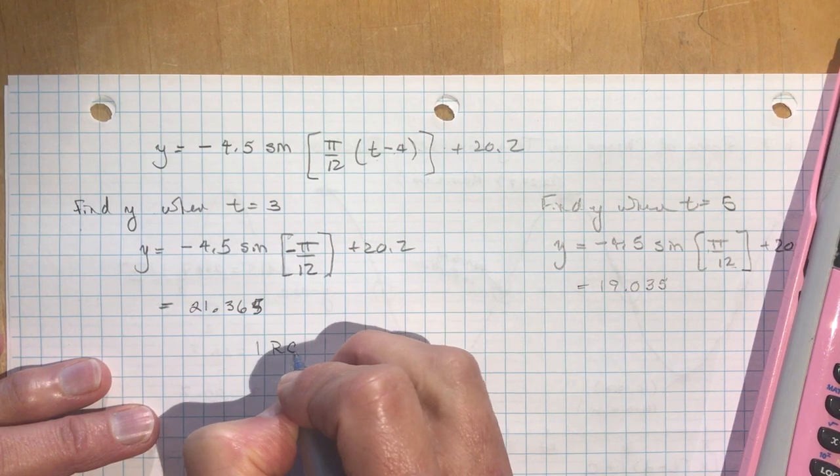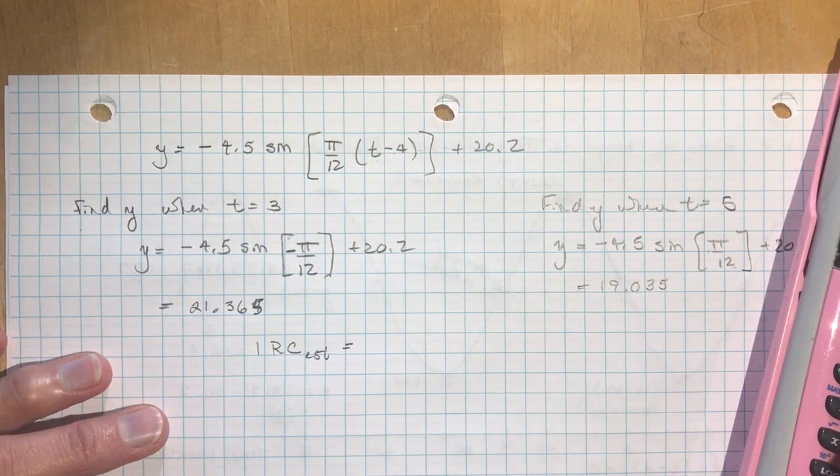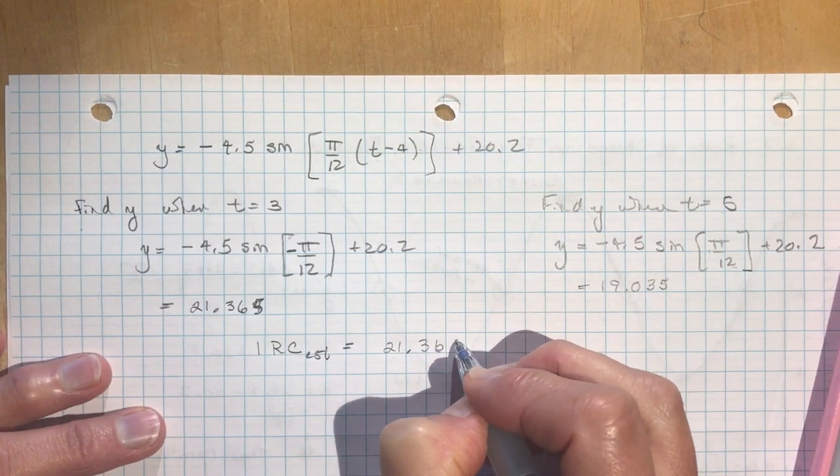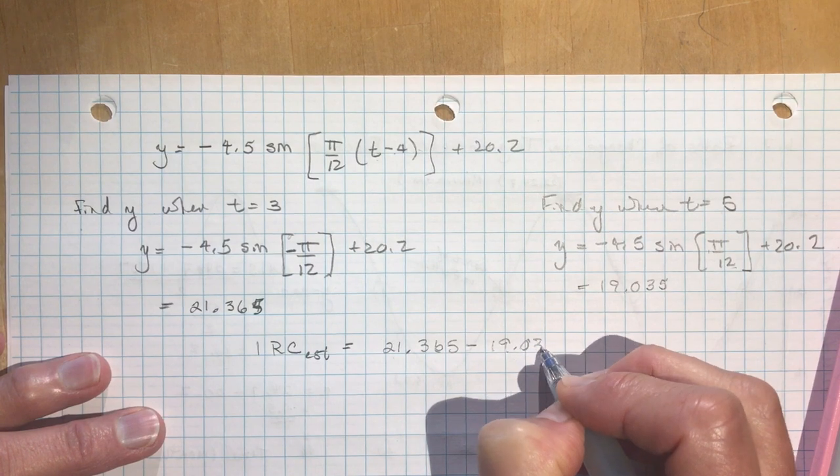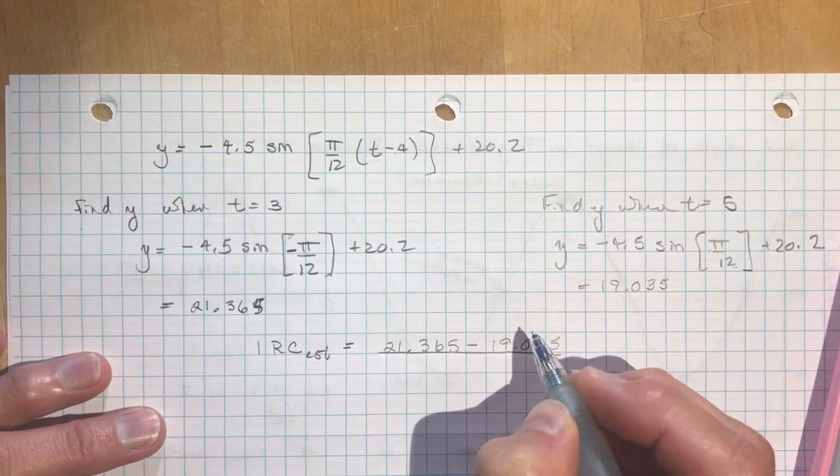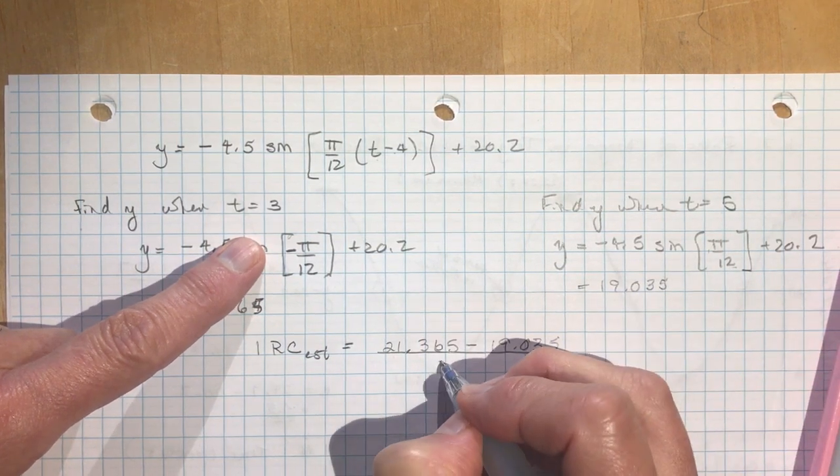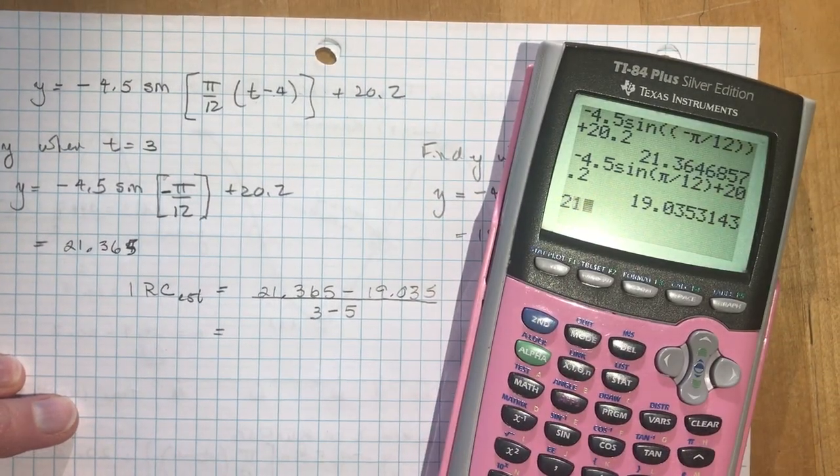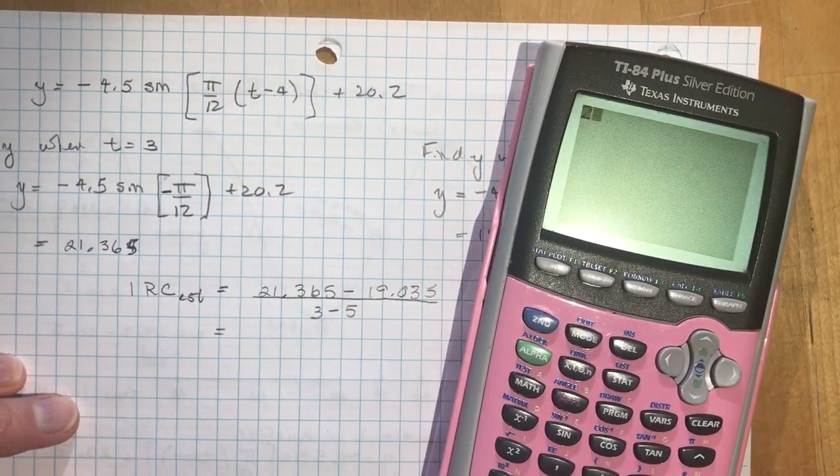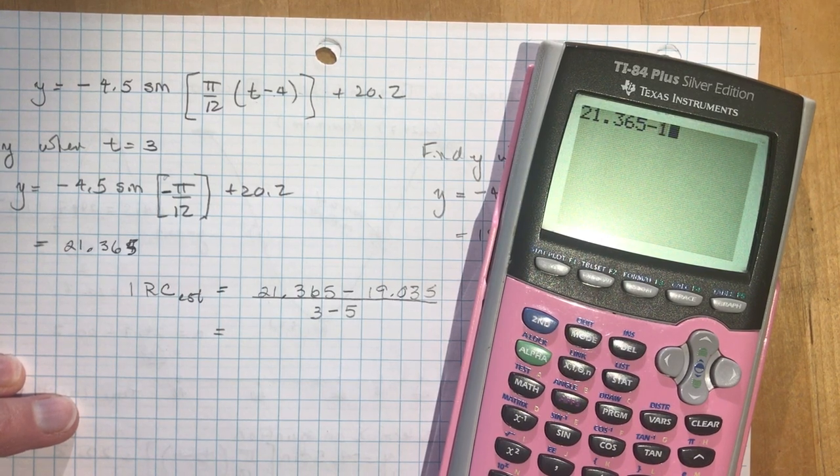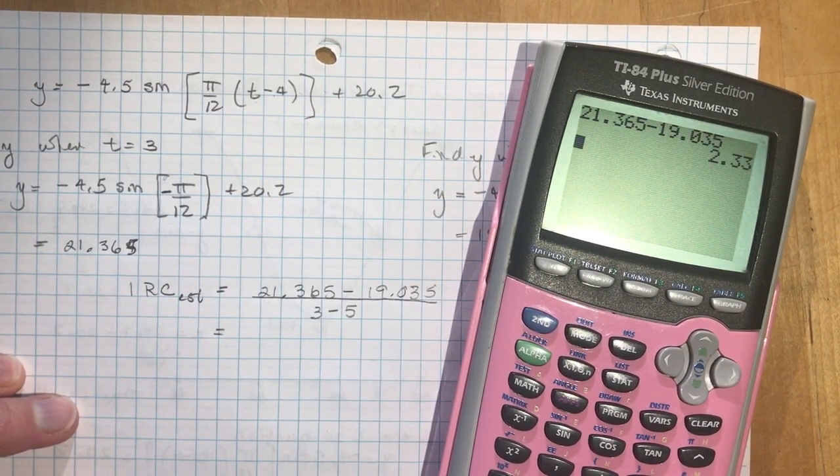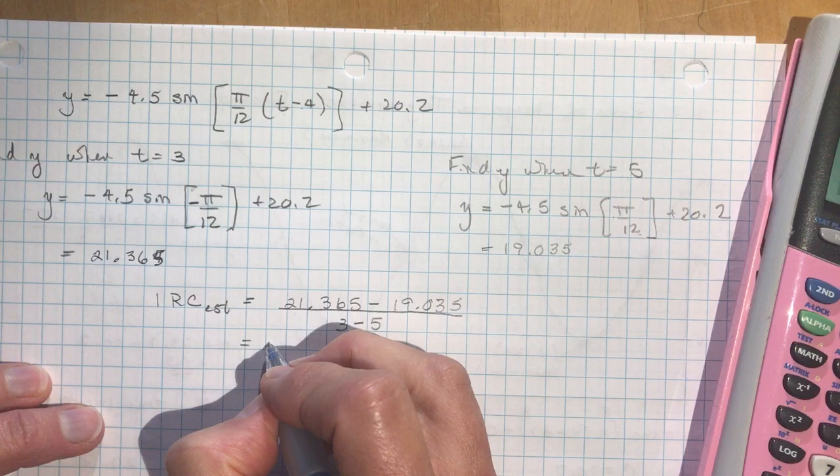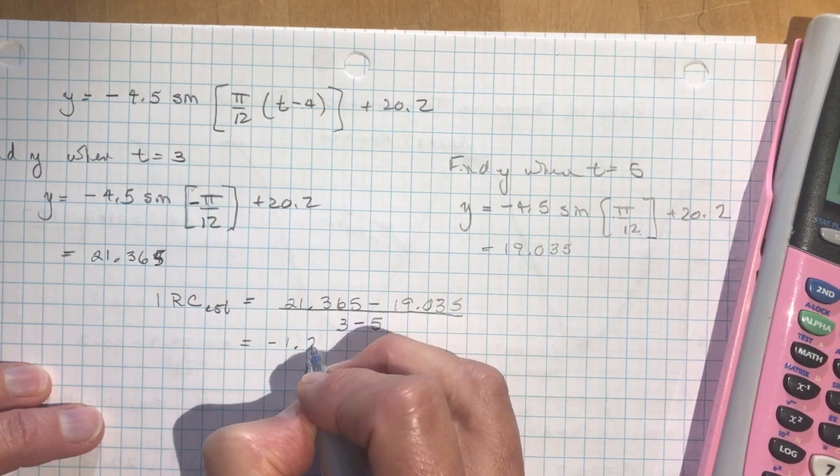Okay, so the instantaneous rate of change, this is estimated, because we're not doing calculus yet, so we're going to do just rise over run, so 21.365 minus 19.035, and we're going to divide that by, we used, this was t at 3 and 5, so 3 minus 5, so I'm going to do 21, whoops, 21.365 minus 19.035, and I'm going to divide that by negative 2, and I get minus 1.1, about 1.2.